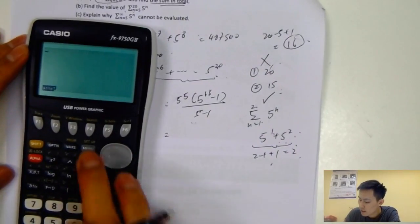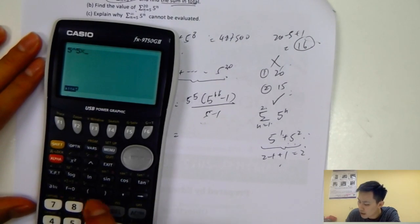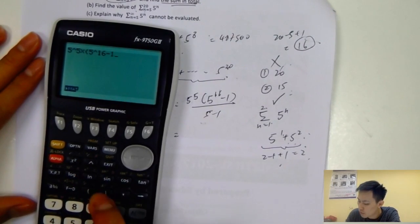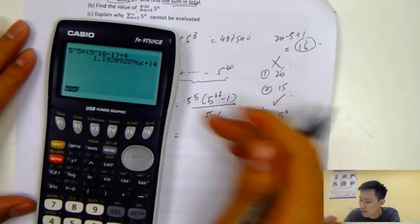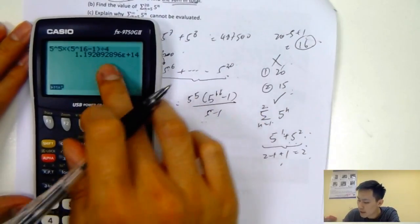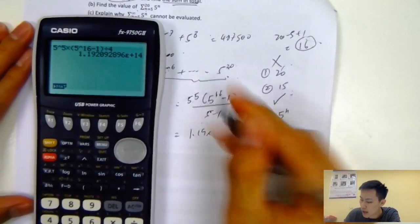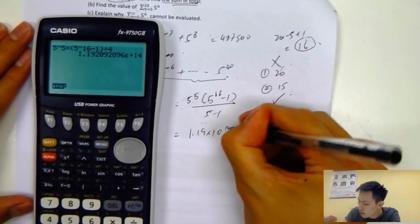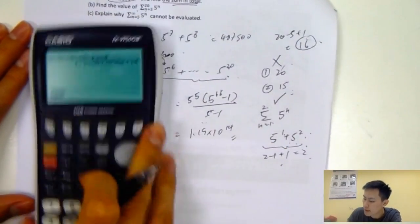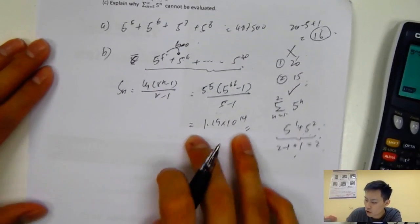Then you just type it into your GDC: 5 power 5 times (5 power 16 minus 1) divided by 4. We get the answer: 1.19 times 10 to the power 14. It's a very large number.